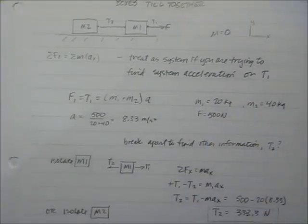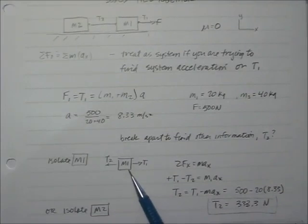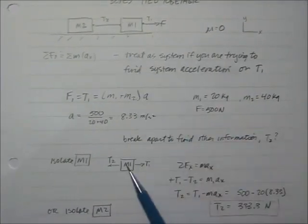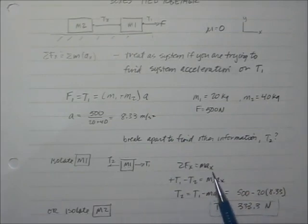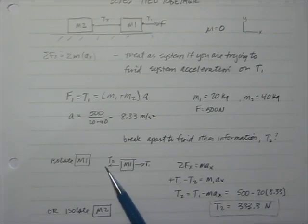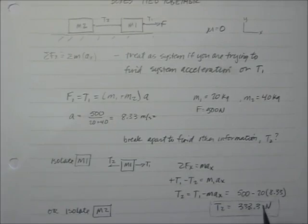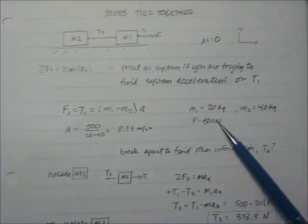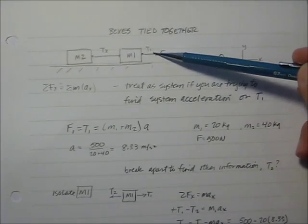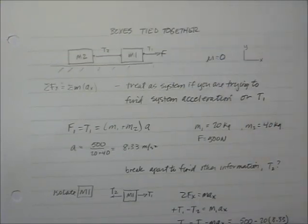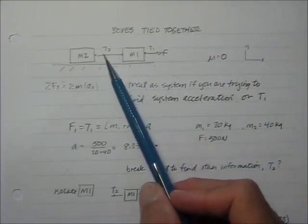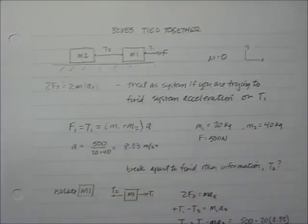Isolate M1 and draw a separate free body diagram with T1 going one way and T2 going the other. The sum of the forces in X equals mass times acceleration: T1 minus T2 equals M1 times acceleration. Solving for T2, we get T2 equals 333 N. T1 was 500 N, so the tension drops to 333 N because T2 is only pulling one mass, while the applied force is pulling both.